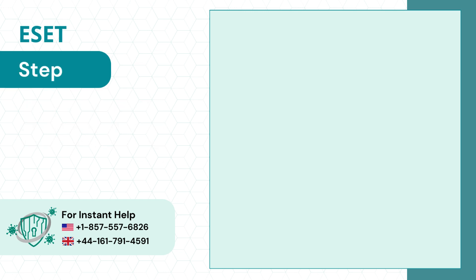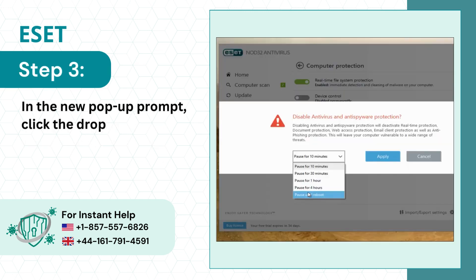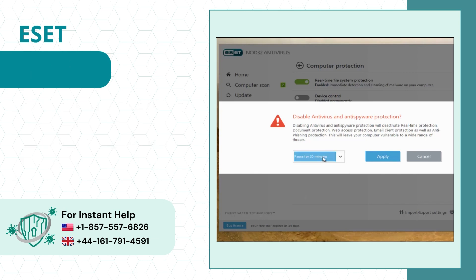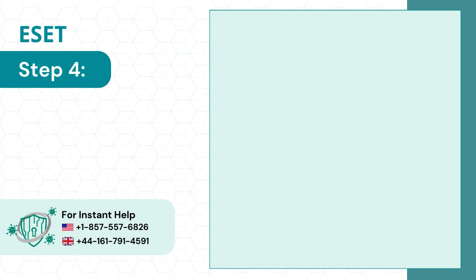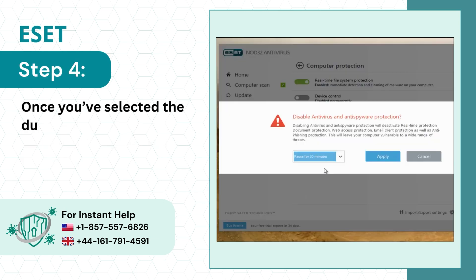Step 3: In the new pop-up prompt, click the drop-down and select how long you want to disable. Step 4: Once you've selected the duration, click Apply.